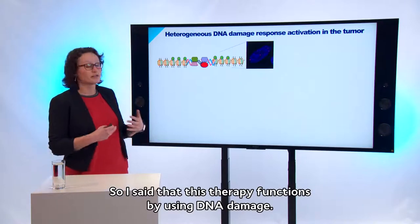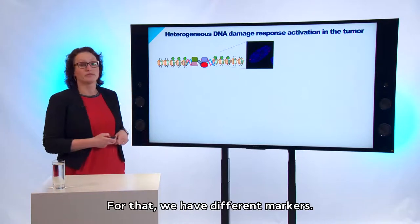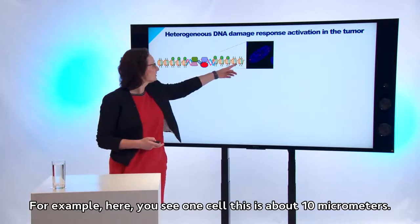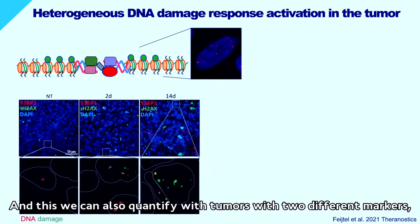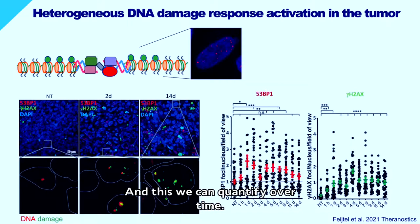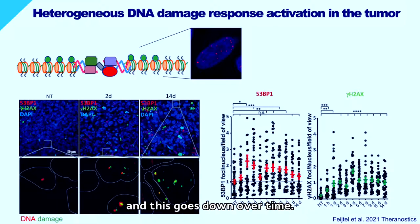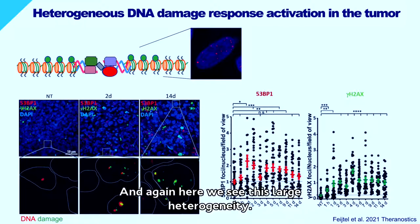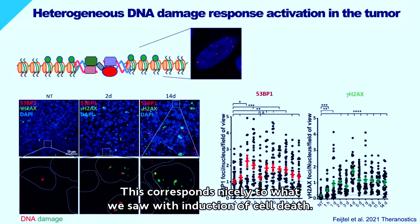This therapy functions by inducing DNA damage, which we can also image with the microscope using different markers. Each dot visible in a cell — about 10 micrometers — represents a DNA damage event induced by the treatment. We quantified this in tumors using two markers, 53BP1 and gamma-H2AX, which are markers for DNA double-strand breaks. Both markers show induction of DNA damage that decreases over time, and again we observe large heterogeneity — some cells have major DNA damage while others have much less — which corresponds well with what we saw for induction of cell death.